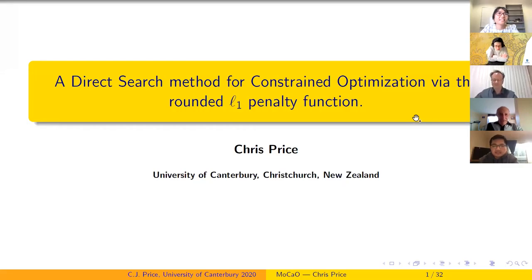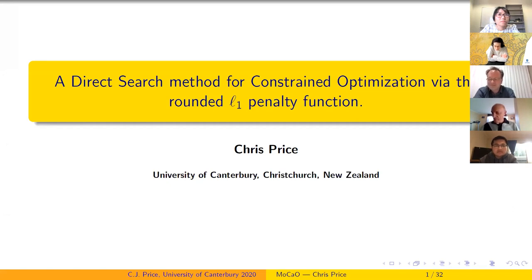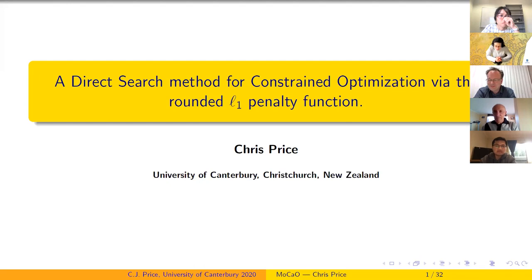Christopher John Price got an undergraduate degree in electrical and electronic engineering and a PhD in mathematics, both from University of Canterbury. He is currently the deputy head of the School of Mathematics and Statistics at Canterbury University. He is associate editor of Computational Optimization and Applications, and his research interests span from optimization to applications in acoustics and direct search methods in optimization.